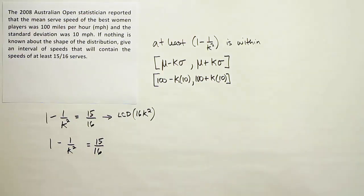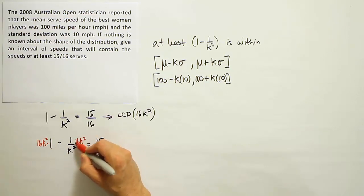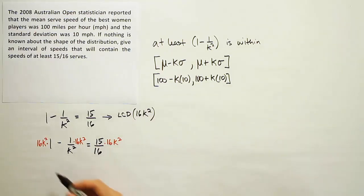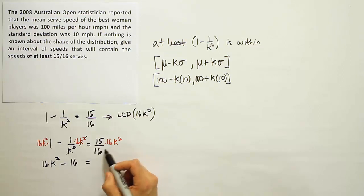So now I'm going to place my 16k squared next to each term. And then we'll cancel accordingly. So the first thing I see is that 16k squared times 1 is 16k squared. But over here, I'm able to cancel the k squared and the k squared, giving me minus 16 only. And then over here, I can cancel the 16s, giving me 15k squared. And voila, my fraction or my equation is free of fractions at that moment.